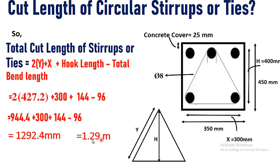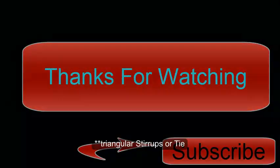It means that we need the length of 1.29 meters of a bar to make this shape of a triangular stirrup or tie. Thank you.